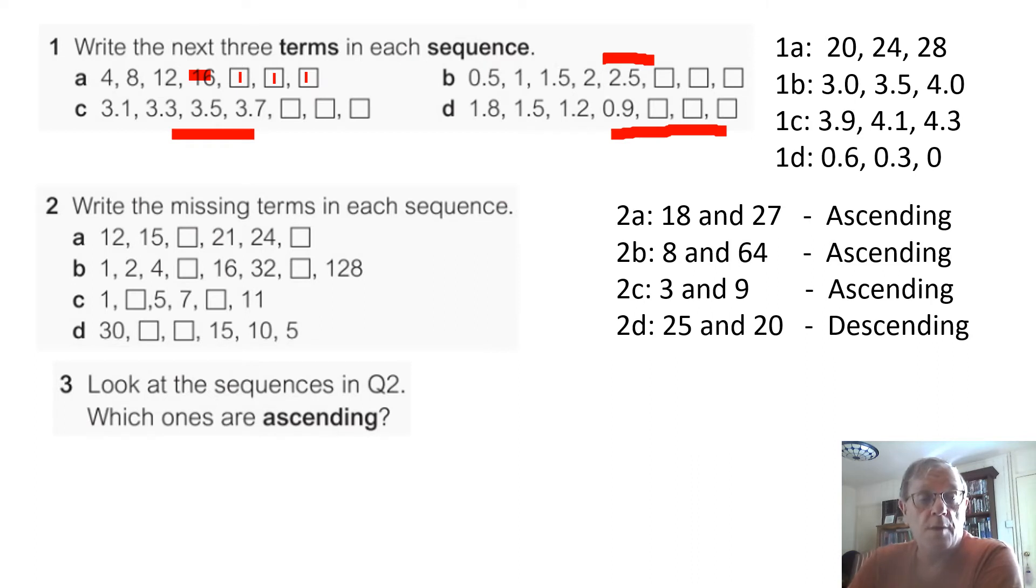Write the missing terms in each sequence. So I'll do questions 2 and 3 at the same time. Question 2a, that is going up in threes. So that is ascending and the missing terms are 18 and 27. B is also ascending, but this time doubling each time. So the missing numbers are 8 and 64. This sequence is also ascending, going up, and the missing terms are 3 and 9. It's going up in twos. And the last one is coming down in fives. So the missing terms are 25 and 20 and we call that sequence descending.